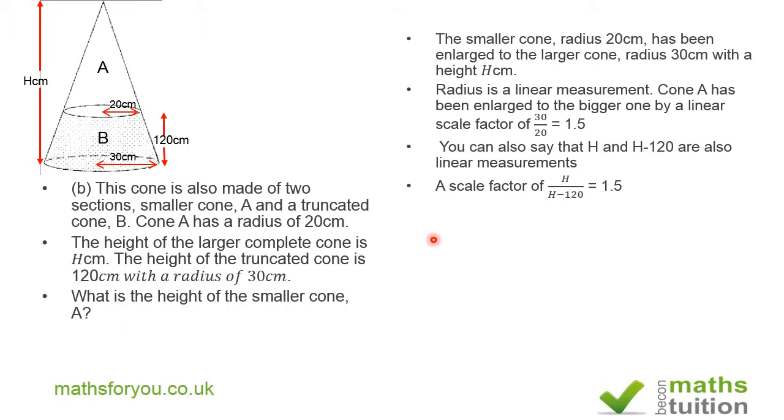If we cross multiply, we get H equals 1.5 times (H - 120). Opening the brackets, H equals 1.5H minus 180.